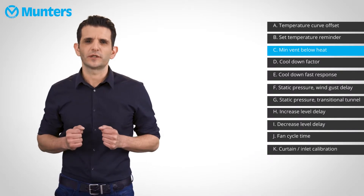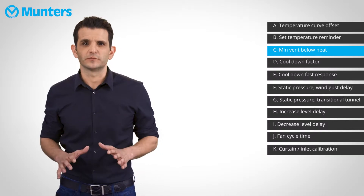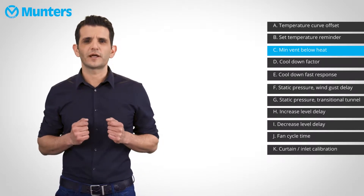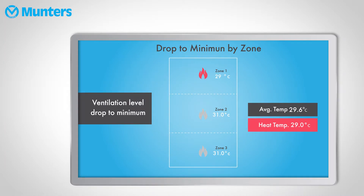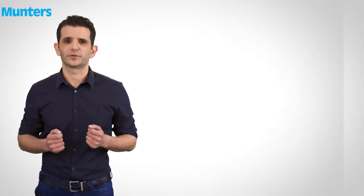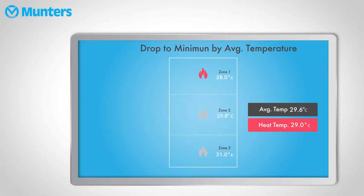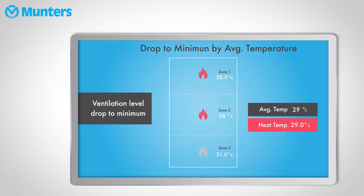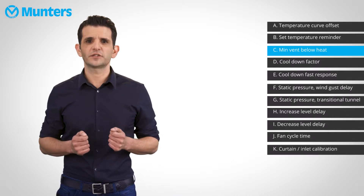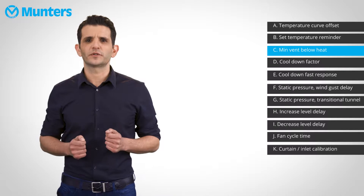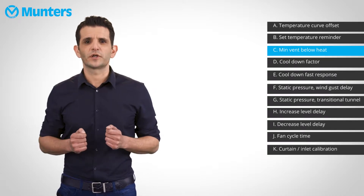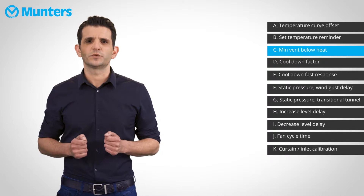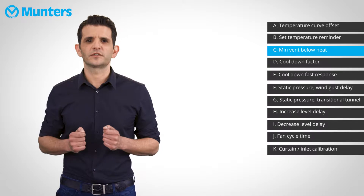Let's talk about when the minimum ventilation drops to minimum. As you know from the precision videos, whenever the heaters kick in, the level of ventilation reduces to minimum. This reduction occurs when the overall average of the house reaches heat temperature, or when a specific zone reaches the heating temperature. This parameter defines when ventilation goes to minimum. By default, this parameter is by the house average. However, if you grow in a cold climate or the house temperatures are not even throughout the structure, you can try the zone option, which will reduce the ventilation to minimum if just some of the house heaters are activated.